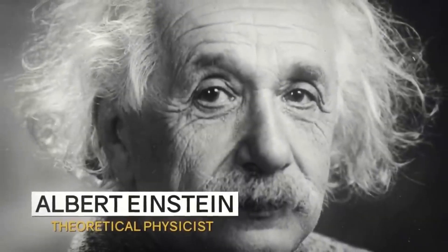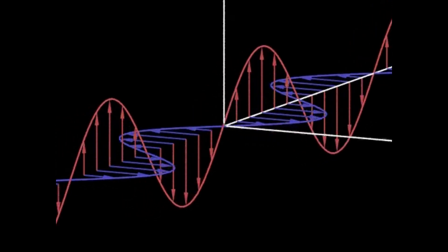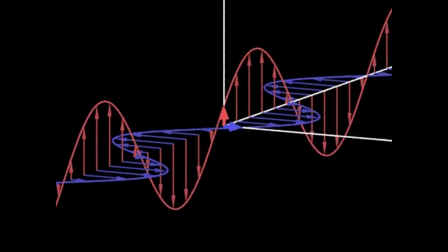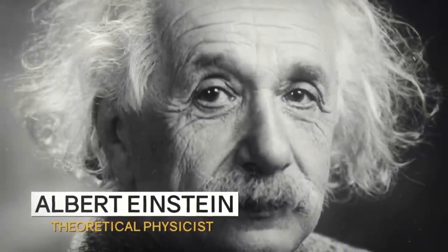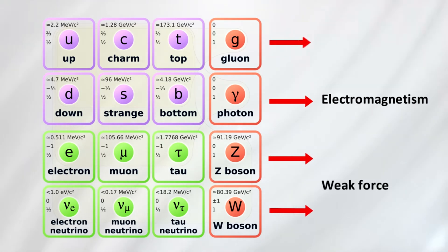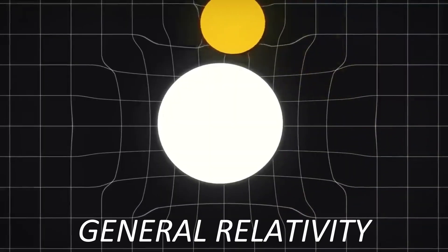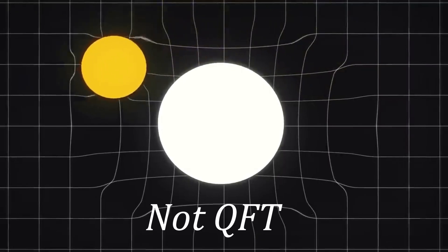Einstein tried to unify the fields, both gravity and electromagnetism into a single equation. But actually, he never succeeded. Today, physicists are still searching. We've unified electromagnetism, weak and strong fields in the standard model. But gravity, it doesn't fit. It's still described by general relativity, not quantum field theory.